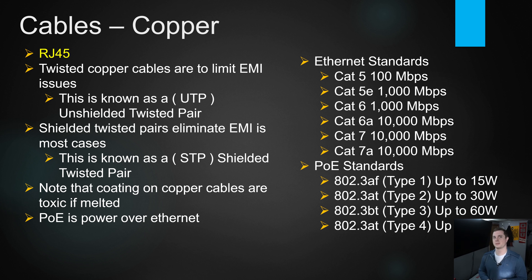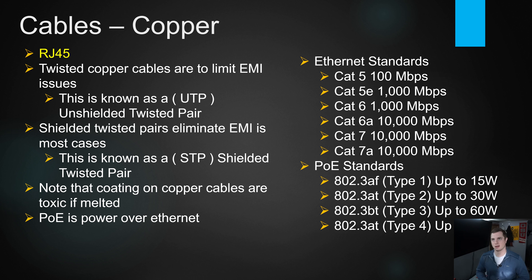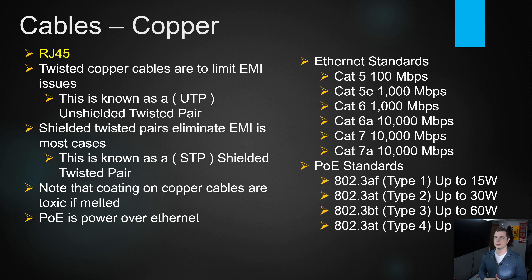Copper cables are sensitive to EMI — electromagnetic interference. Anything that pulls a lot of power, like lighting, can disrupt the electrons flowing through a copper cable. One fix is using twisted copper cable — just twisting the eight wires inside your ethernet cable helps. Shielding the twisted pair also insulates against interference; a shielded twisted pair (STP) is pretty solid, though they are expensive.